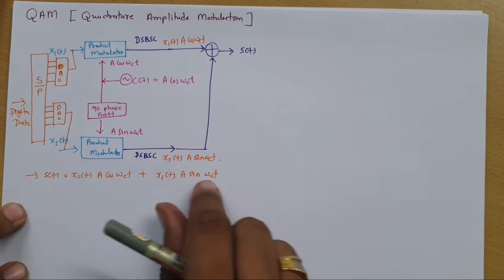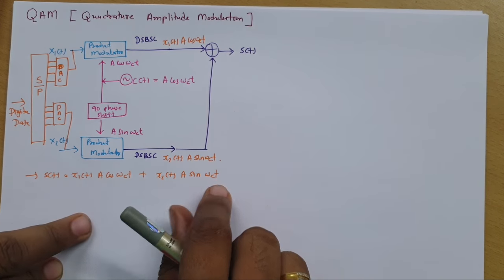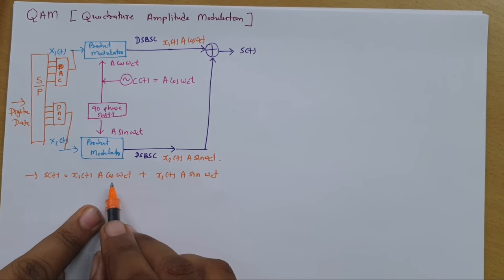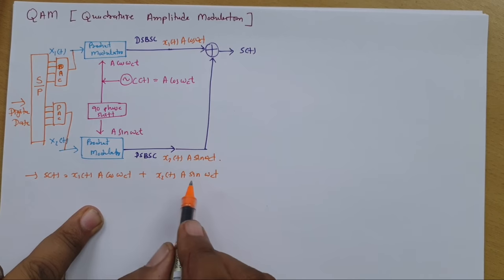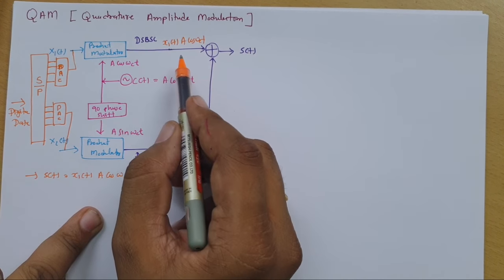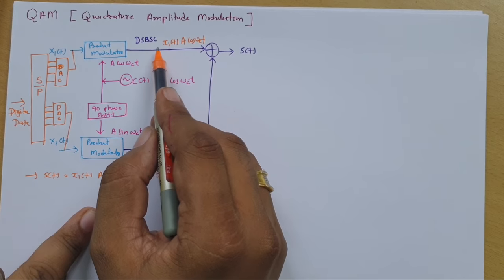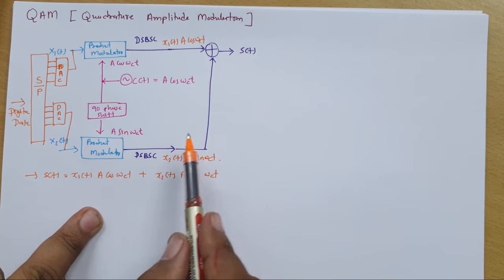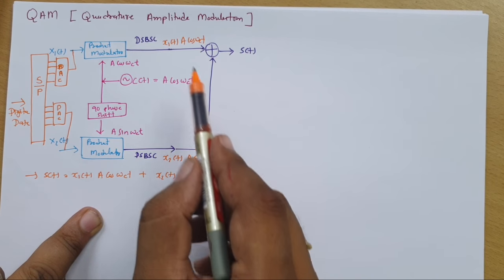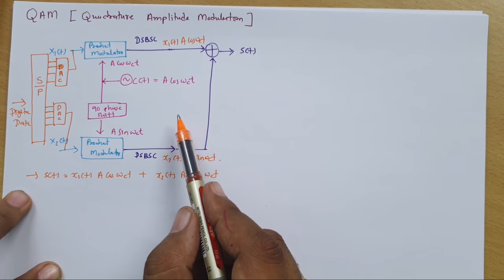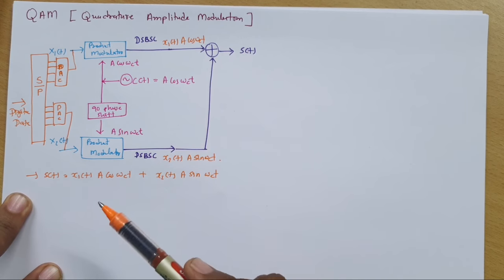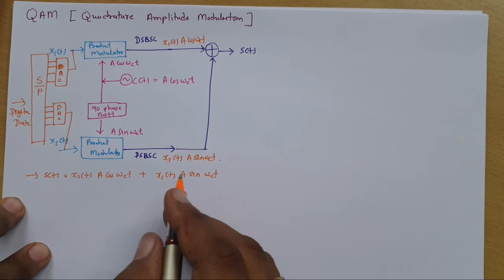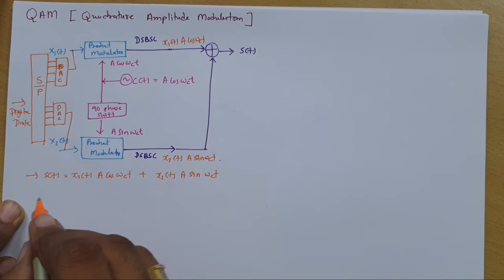This is the transmitted signal S(t). Over the same channel, we are utilizing bandwidth effectively. In DSBSC you need a bandwidth of fm, but here we are transmitting two DSBSC signals over the same channel, so we optimize bandwidth utilization.